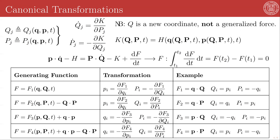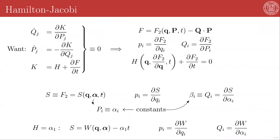Our whole motivation for developing the formalism of canonical transformations is that we seek a transformation where the Hamiltonian is independent of both the coordinates and the momentum and is therefore constant. In this case, all of the phase space values are constants of motion and the system is completely integrable. Not all Hamiltonian systems will be completely integrable, but central force motion, which is something that we care deeply about, is the classic example of this type of system.